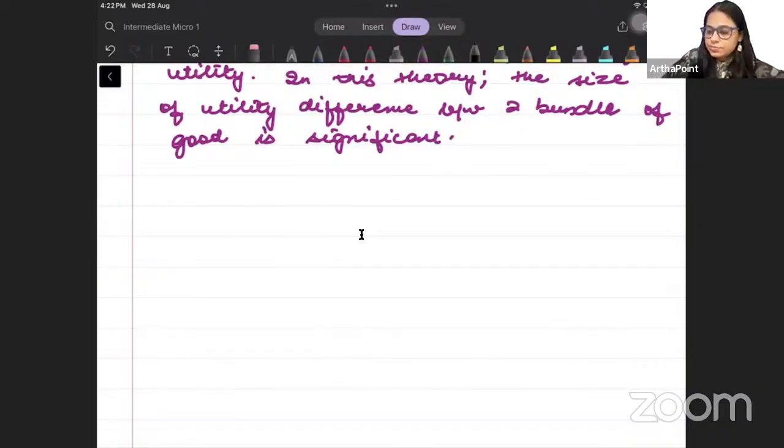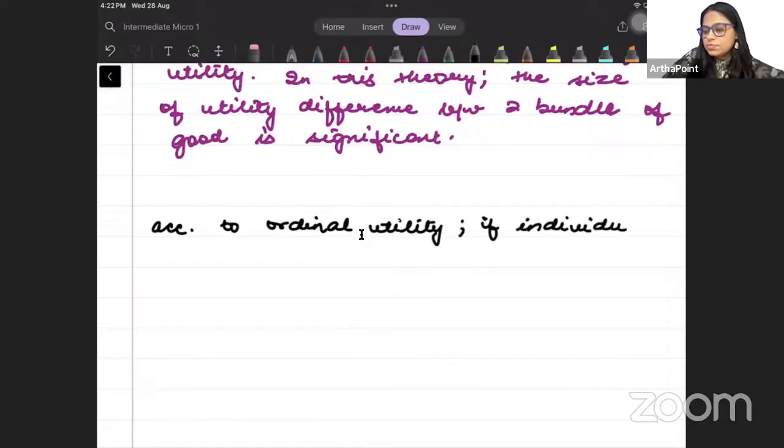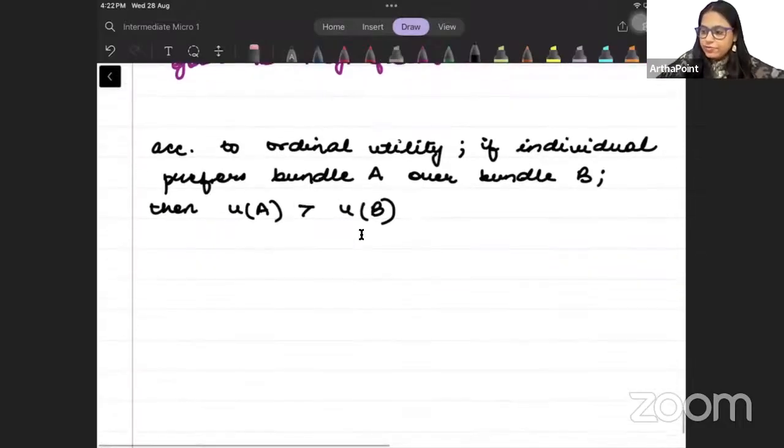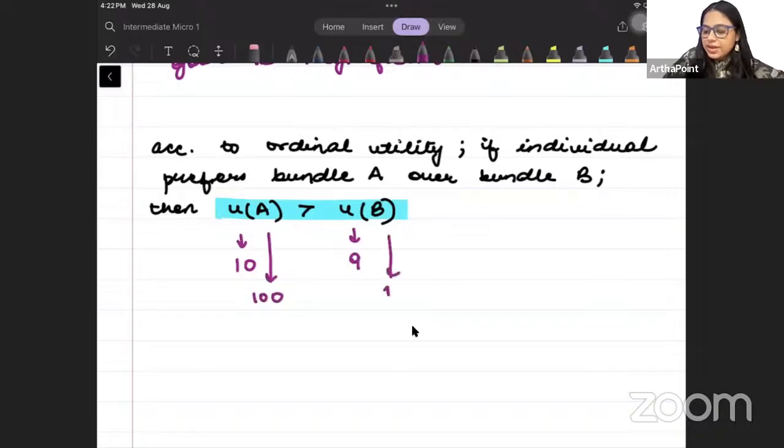So, according to ordinal utility, if individual prefers bundle A over bundle B, then UA should be greater than UB. Utility from A should be more than utility from B. But it does not matter what this number is. Utility from A can be 10, B can be 9. Utility from A can be 100, B can be 1. It does not matter. Just that one utility should be greater than the other.